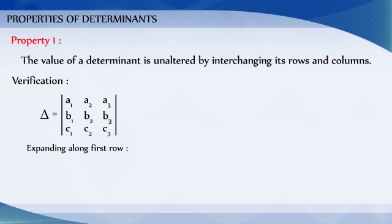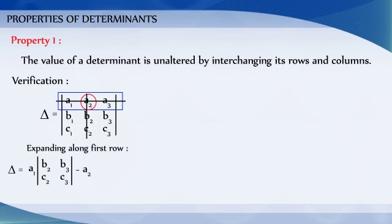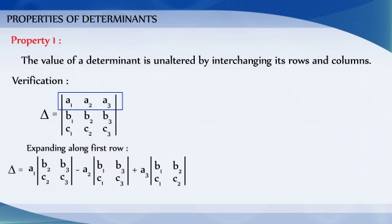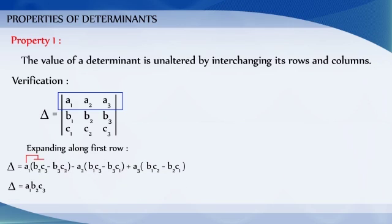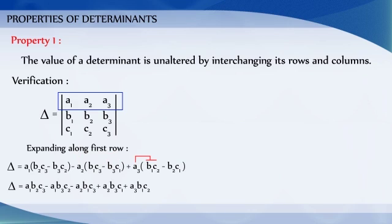Expanding this determinant along the first row, we get the value as: a1·b2·c3 minus a1·b3·c2, minus a2·b1·c3, plus a2·b3·c1, plus a3·b1·c2, minus a3·b2·c1.